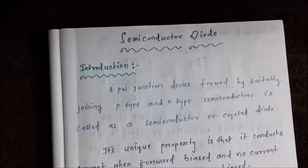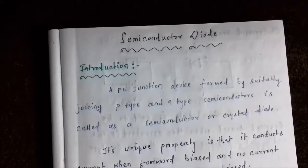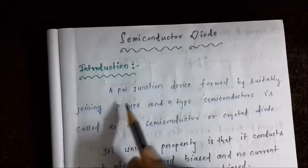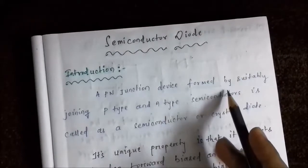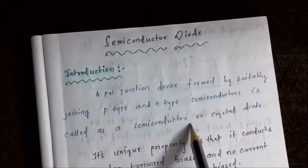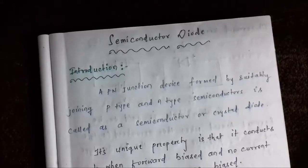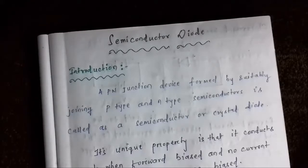The semiconductor diodes are similar — they are the same thing as a PN junction. Let us first get to know the definition of a semiconductor diode. A PN junction device formed by suitably joining P-type and N-type semiconductor is called a semiconductor or crystal diode. It is the same thing as a PN junction, but why use it? What is the necessity of a semiconductor diode? Why does it hold such an important place in the field of electronics engineering?